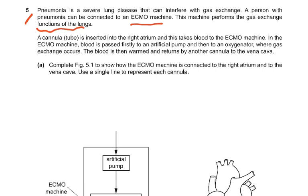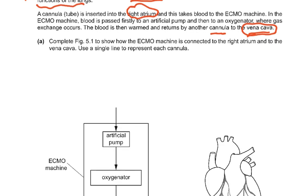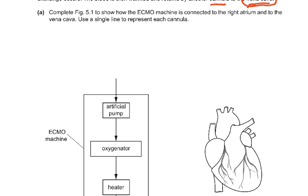A cannula tube is inserted into the right atrium, taking blood to the ECMO machine. In the ECMO machine, blood is passed first to an artificial pump and then to an oxygenator where gas exchange occurs. The blood is then warmed and returned by another cannula to the vena cava. The question asks us to complete figure 5.1 to show how the ECMO machine is connected to the right atrium and to the vena cava, using a single line to represent each cannula.